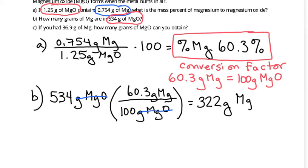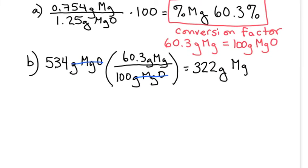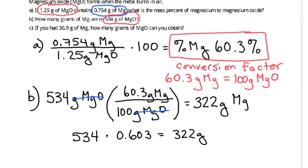You might notice that this is the same thing as saying 534 times 0.603. It's exactly the same, it's just using the percent in a different way. But I wanted to focus on this conversion factor for this letter C.